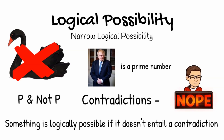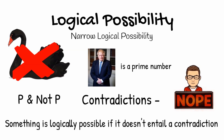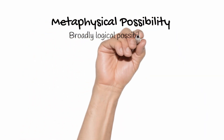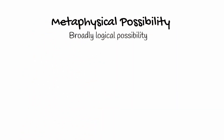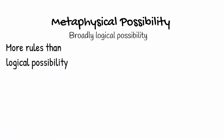That might seem strange, but remember different possibilities have different rules, and the rules for logical possibility don't rule that out. So while a prime minister being a prime number might not be logically impossible, many people think it's metaphysically impossible — this type of possibility is called metaphysical possibility or broadly logical possibility. It has more rules than logical possibility and so will rule out more things. What metaphysical possibilities are is actually pretty difficult to say, and so it's often taken to be primitive.